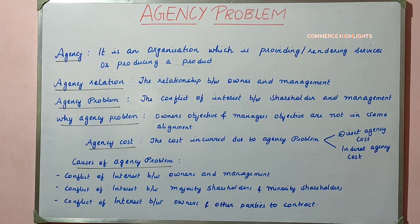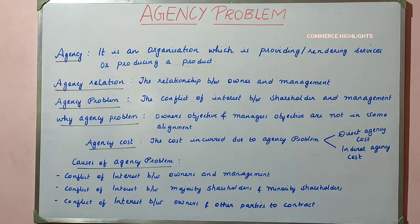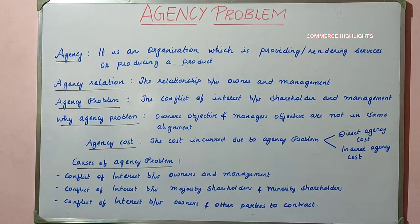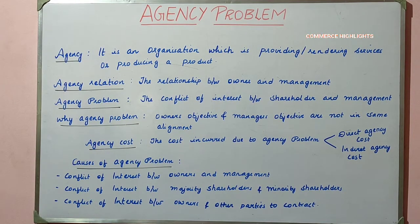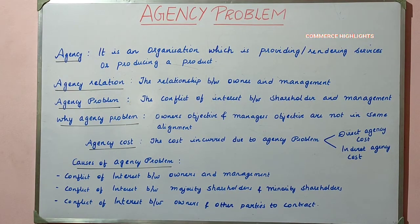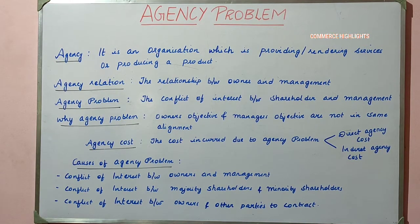Now coming to the reasons for agency problem. There are three main causes. The first is when there is any conflict of interest between the owners and the management, which gives rise to an agency problem.